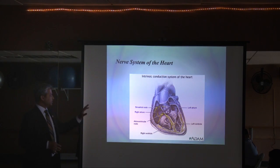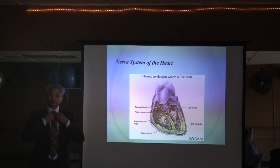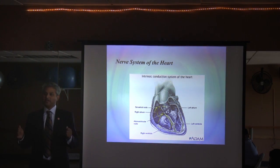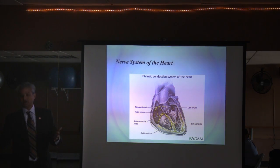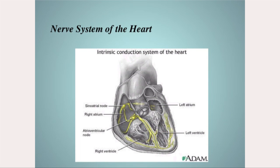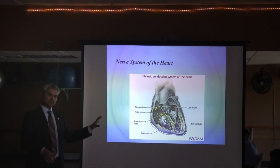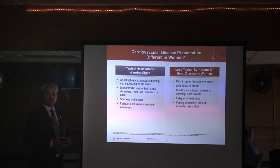Just as there is plumbing — blood vessels of the heart — there are also nerves of the heart. On an EKG, a doctor may say you have a 'right bundle branch block.' Most people think that's a blockage in the plumbing, but it's actually in the electrical system. It's important to ask your doctor: is this a blockage in the electrical conduction system, or in a blood vessel?